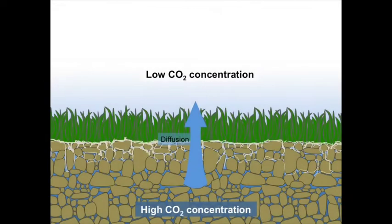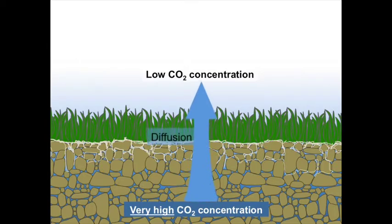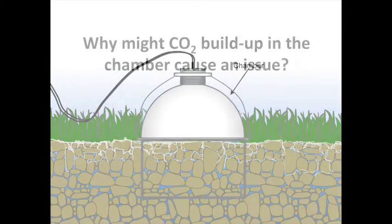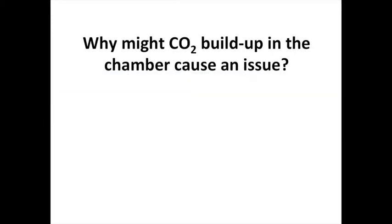Remember, CO2 leaves the soil through diffusion. The rate of diffusion depends on the concentration gradient between the soil and the air. The greater the gradient, the greater the rate of diffusion. Think about how our instrument is going to measure CO2 efflux. CO2 will build up in the chamber over time, and that will give us our flux. Based on what we just learned about diffusion, why might this cause an issue?